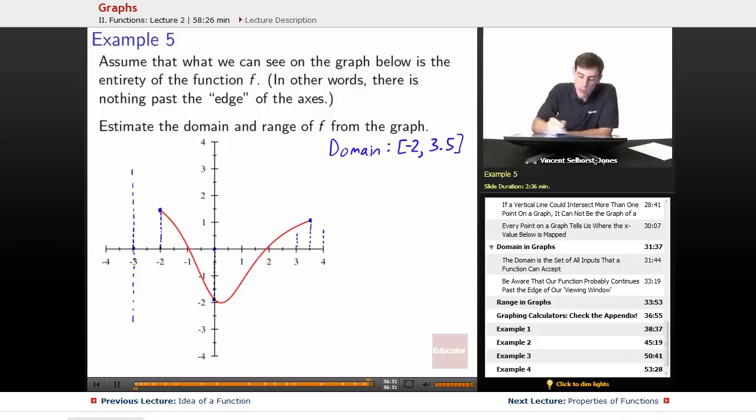What about the range? So range is everything that can be output. Is there anything that can output at 1? Yeah. 1 manages to touch here and manages to touch here. So there is some input that spits out 1.